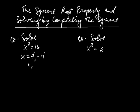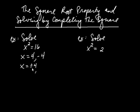A lot of times we write this in the following way just to save space: x is equal to positive or negative 4. So there are really two solutions here, one for the positive and then one for the negative. So two solutions, positive and negative 4.